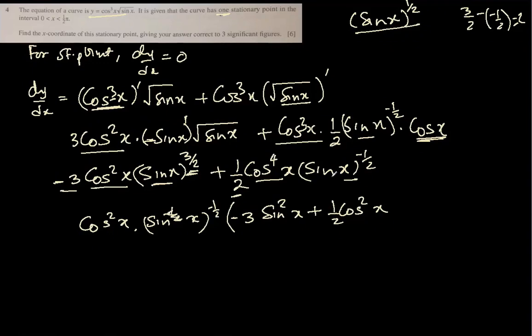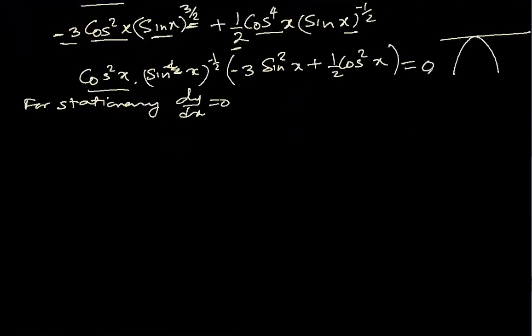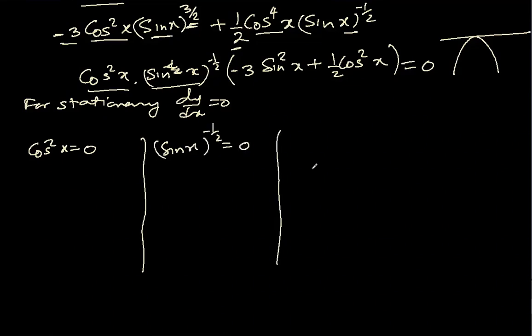Now for stationary point, find the x coordinate. dy/dx is equal to 0, because at every stationary point the tangent is a horizontal line, the gradient of horizontal line is 0. That's why dy/dx is 0. So that means this whole thing is equal to 0. That means individually cos²x will be equal to 0, sin x to the power -1/2 will be equal to 0, and -3 sin²x plus 1/2 cos²x will also be equal to 0.